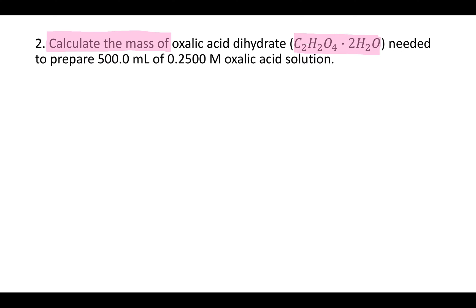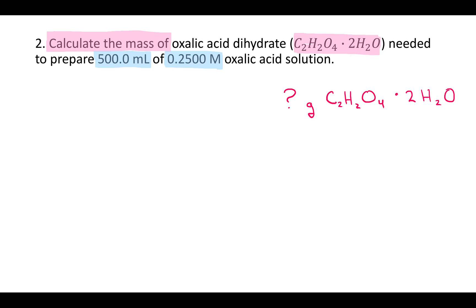Whenever you read a chemistry question, the two things you first want to identify are: one, what are they asking for, and two, what are they giving you. Here they're asking you to calculate the mass of oxalic acid dihydrate — so we're looking for grams of oxalic acid dihydrate. And the numbers they give us are 500 milliliters and 0.25 molar solution.